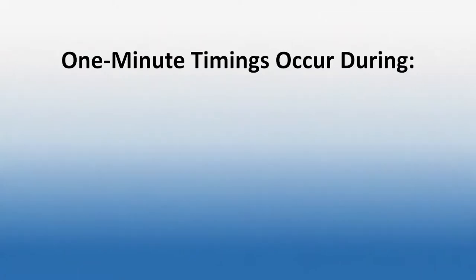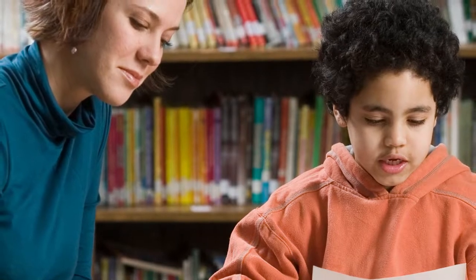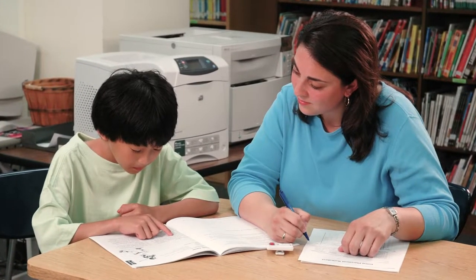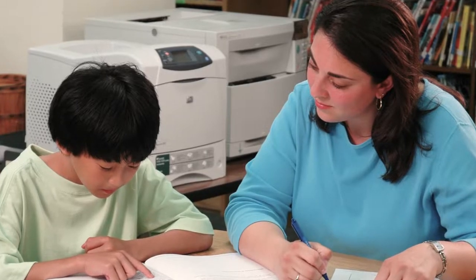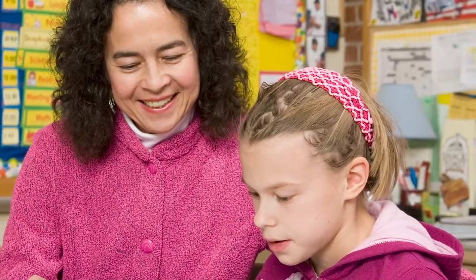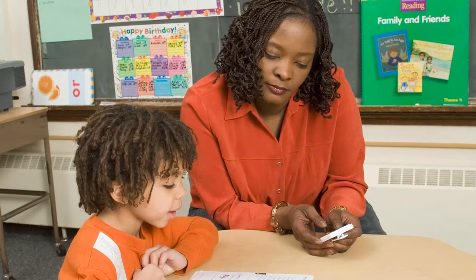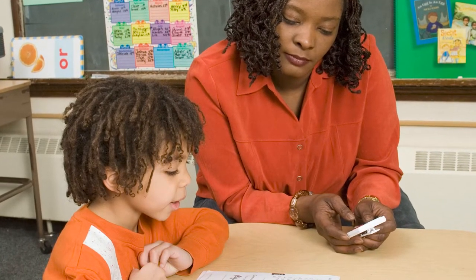There are several situations in which teachers time students' reading. During screening, one-minute timings occur while identifying students who need fluency help. In Read Naturally Encore, one-minute timings happen during placement and as students work through stories. Teachers use the screening tools and guidelines adopted by their districts. For students who do need work on fluency, teachers administer a placement test in Encore. This involves a one-minute timed reading to place students in a level with an appropriate goal. Once a student is working in the program, teachers conduct one-minute cold and hot timings to monitor progress. Each of these timings serves a different purpose, and you'll use the resulting scores in different ways. But the mechanics of conducting a one-minute timing are the same in each circumstance.